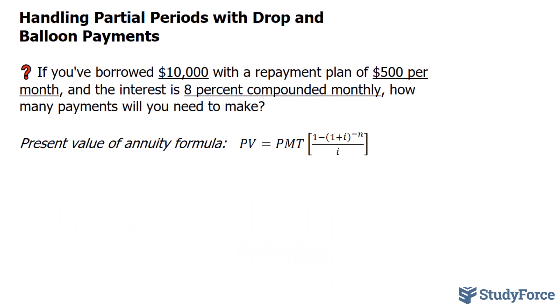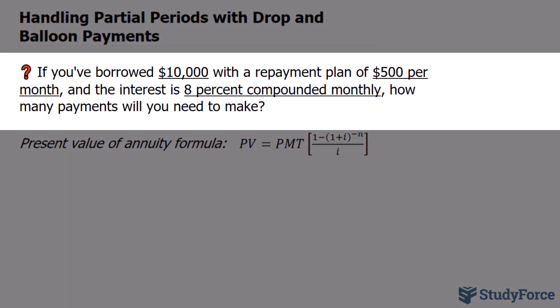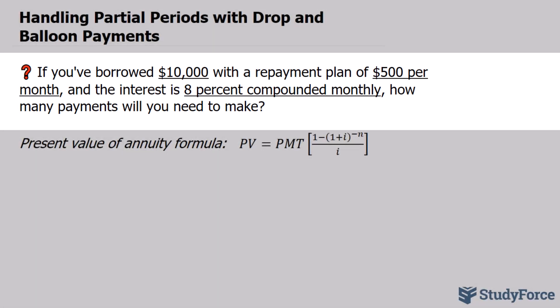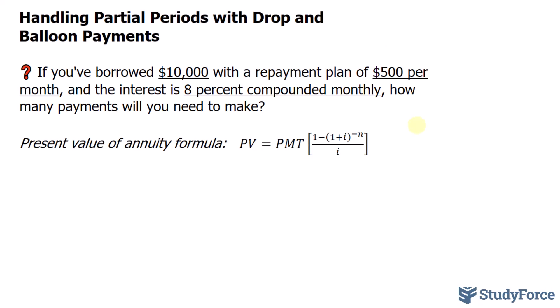In a previous video, we answered the following question: if you've borrowed $10,000 with a repayment plan of $500 per month, and the interest is 8% compounded monthly, how many payments will you need to make? We learned that the answer to this is roughly 21 and a half payments. This means our loan will be repaid back in 21 months plus a partial month.